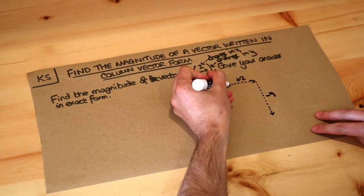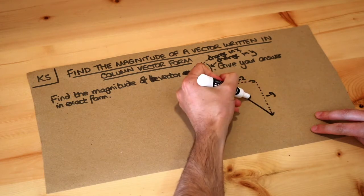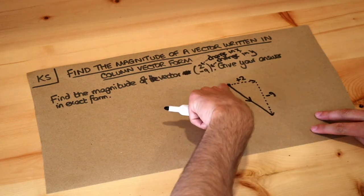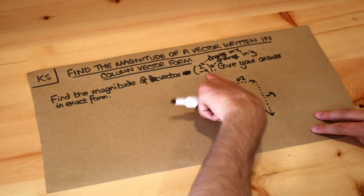And the vector overall is pointing in this direction and remember we put a little arrow to indicate the direction of the vector, so this is the movement that this vector represents.